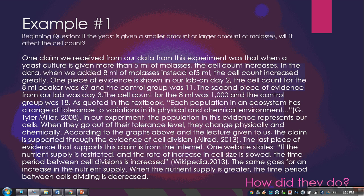As quoted in the textbook: 'Each population in the ecosystem has a range of tolerance to variations in its physical and chemical environments.' In the experiment, the population represents the cells — when they go out of their tolerance level, they change physically and chemically. According to graphs from a lecture, the claim is supported through evidence of cell division. A website also states: if the nutrient supply is restricted, the rate of cell size increase slows and time between cell divisions increases; the same goes for an increase in nutrient supply — more nutrients means cells divide faster.